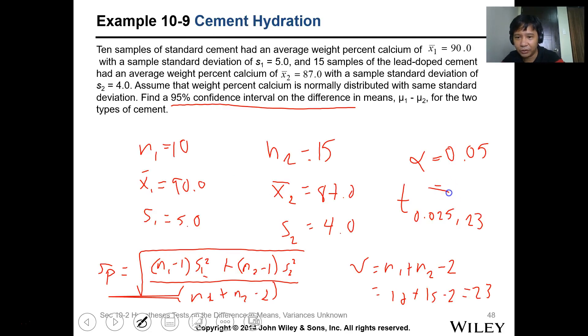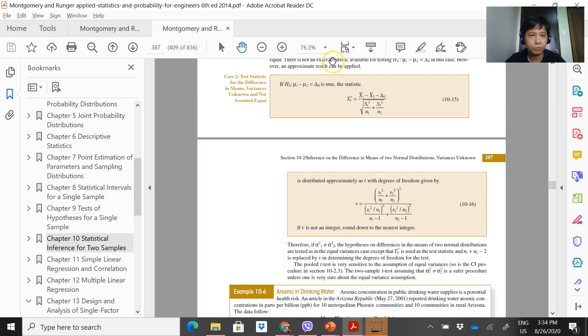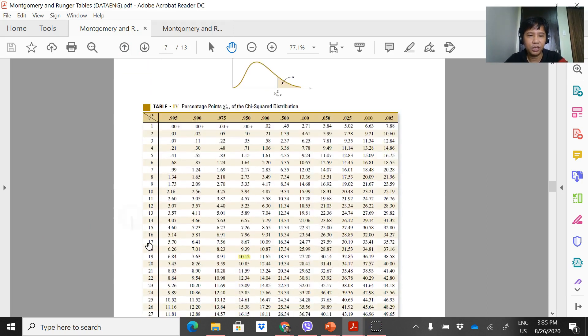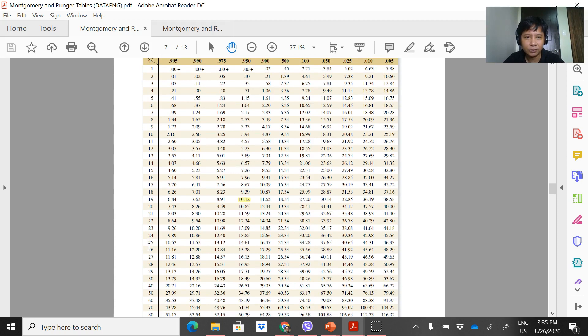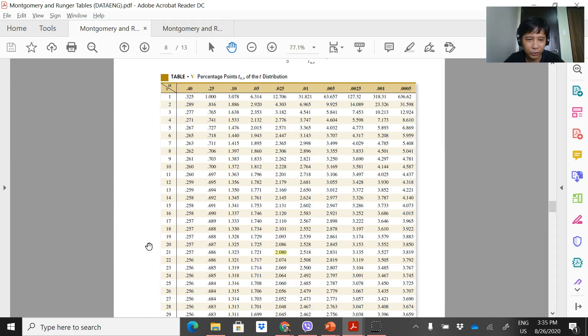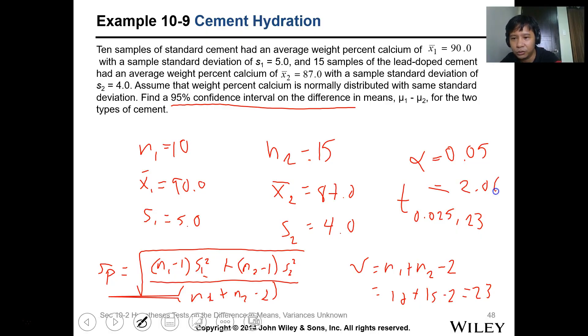So the sp will be equal to the square root of n1 minus 1 times s1 squared plus n2 minus 1 times s2 squared over n1 plus n2 minus 2. First, let's find the t-value using the t-table. So we need 0.025 and 23 degrees of freedom. That's 2.069. So we got the t-value, this is 2.069.